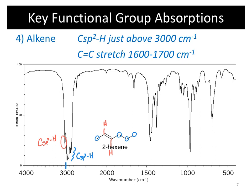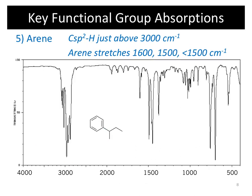We also have the carbon-carbon double bond, which can stretch and show up in the spectrum, usually right around 1,650 wave numbers, though it's not very intense. For aromatics, which also have double bonds, you'll typically see about three signals in the double bond region — usually one at 1,600, one at about 1,500, and one just below 1,500. In an aromatic spectrum, you'll also see sp3 and sp2 C-H stretches.